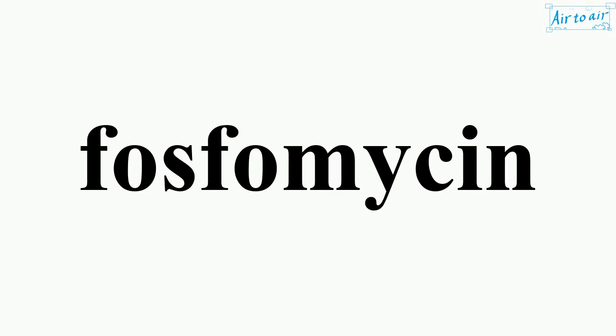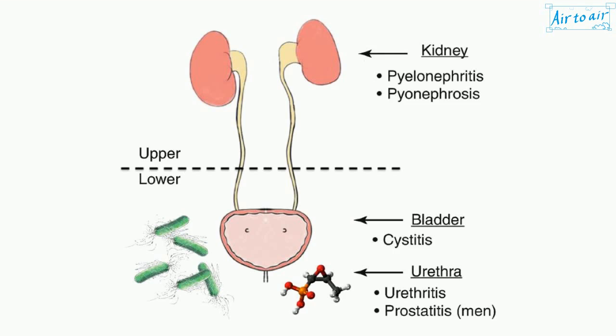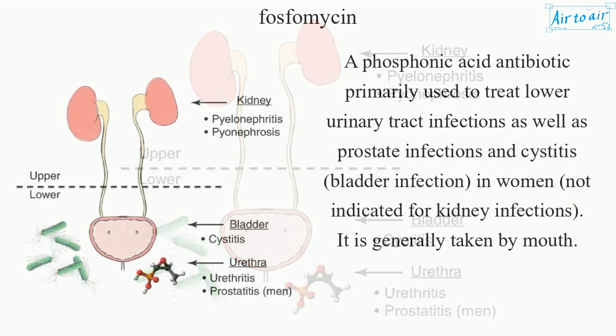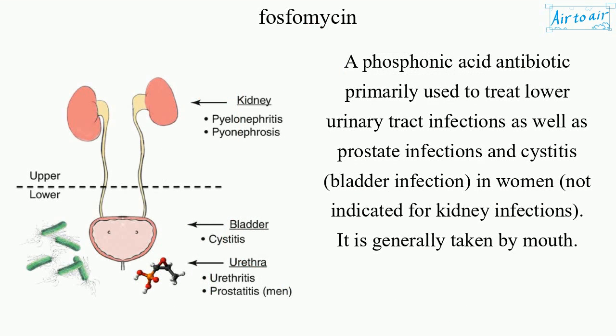Phosphomycin — a phosphonic acid antibiotic primarily used to treat lower urinary tract infections, as well as prostate infections and cystitis. It is indicated for bladder infections in women, but not for kidney infections. It is generally taken by mouth.